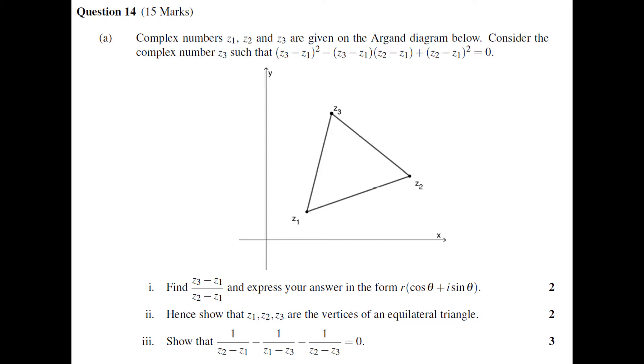The first part wants us to find (Z3 minus Z1) over (Z2 minus Z1) and express that in the form R cos theta plus I sine theta, or in other words in mod arg form. This first part one is what I'll focus on in this video, and then I'll work through parts two and three in follow-up videos.